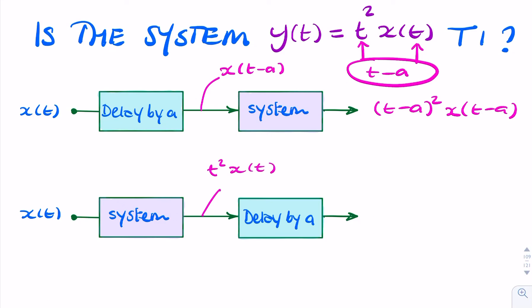And if we then apply a delay, the delay will only affect the signal there. It won't affect this t here. So the output will be t squared times x of t minus a.